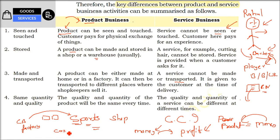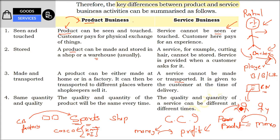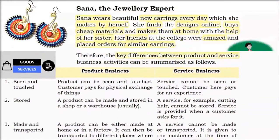Same quantity and quality: for example, a Cosco tennis ball — whether you go to Kashmir or Kanyakumari, the quality and quantity of the product will remain the same every time. But in service business, the quality can vary. For example, teacher X is teaching on YouTube with a million subscribers, while teacher Y has only 100 subscribers — so the quality will change. Sometimes the quality and quantity of service may differ at different times.